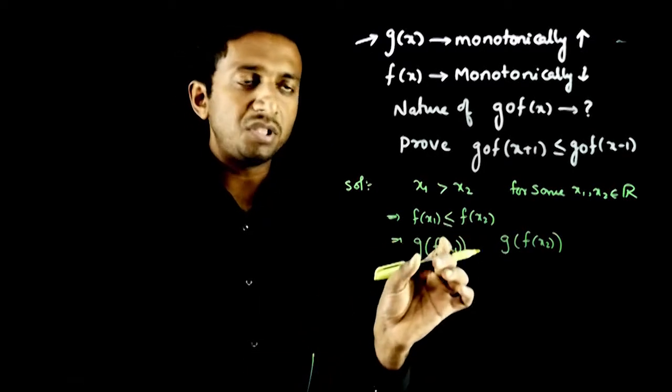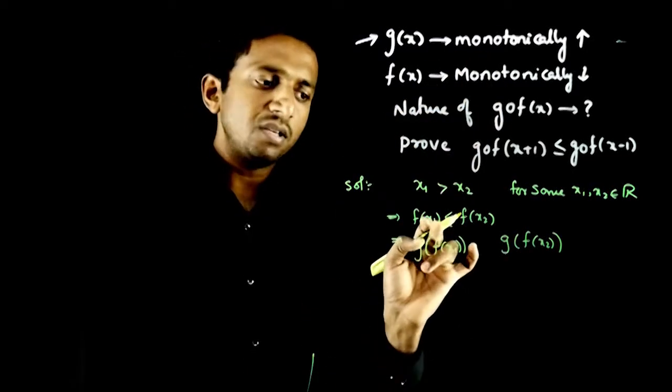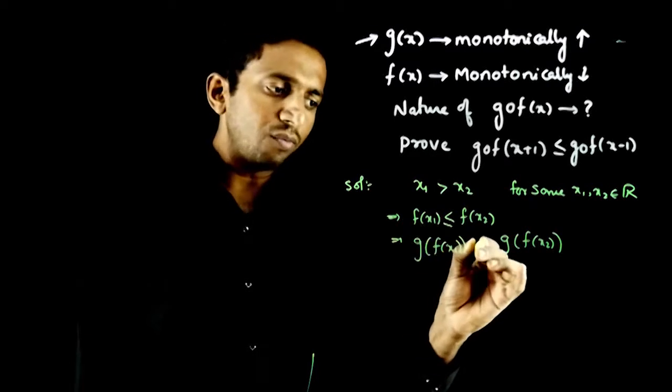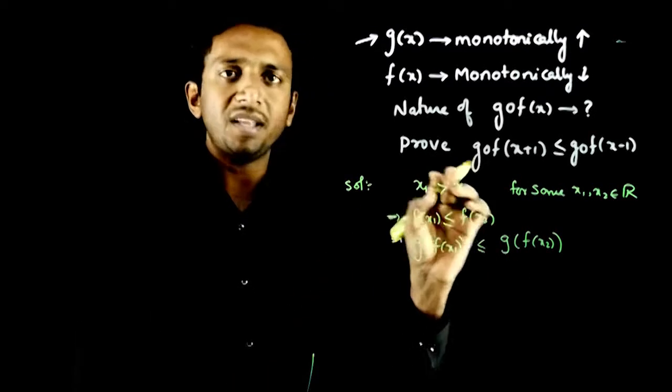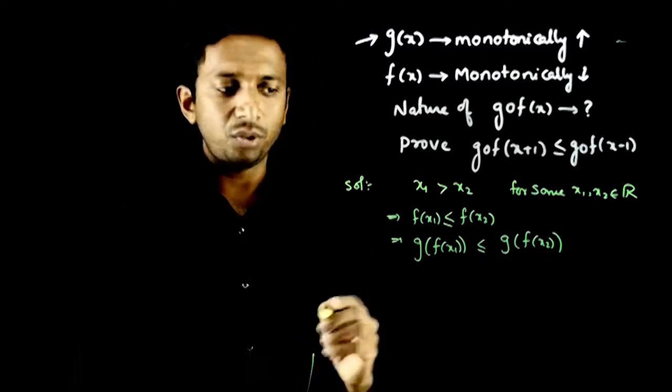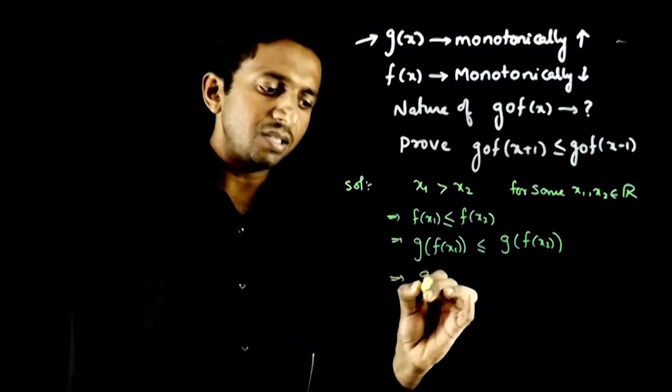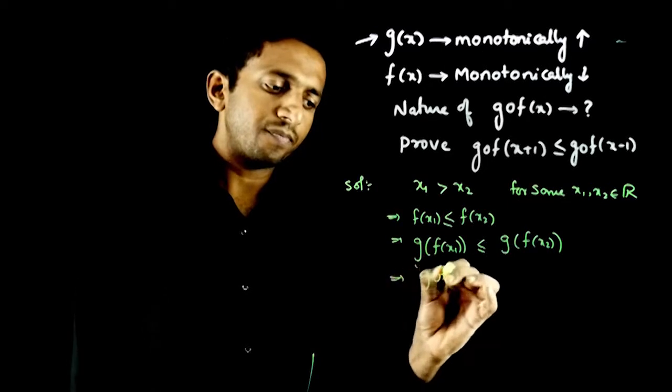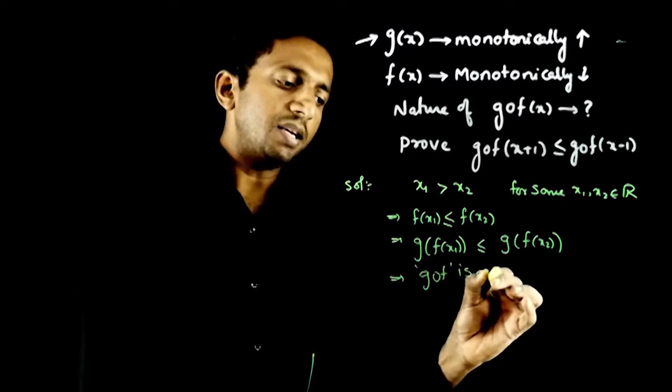So this implies gof(x₁) is less than gof(x₂), which means gof is a decreasing function.